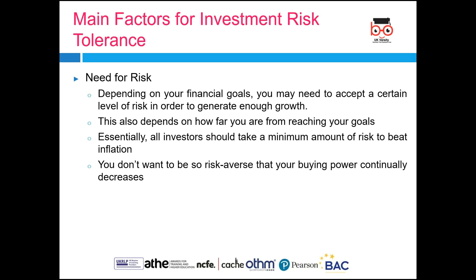Another factor is the need for risk. Depending on your financial goals, you may need to accept a certain level of risk to generate enough growth. For example, if you are in your twenties or thirties, you can allocate a higher proportion of investments in equity asset classes. But if you are in your fifties and sixties, you need to look at fixed income sources such as fixed deposits for your returns. Ideally all investors should take a minimum amount of risk to beat inflation — because if your fixed deposit gives you 5% whereas inflation is 7%, inflation is eating up 2% of your money.